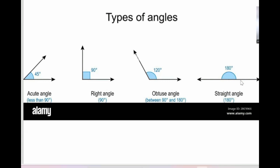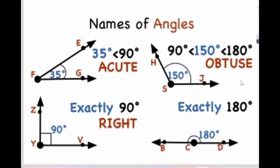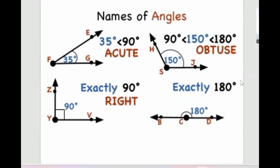I will write it down and send you all the notes at the end of the session. Names of angles: acute is the angle that is less than 90 degrees — for example 35 degrees. This angle is equal to 90 degrees which is a right angle. This one is equal to 150 degrees, it's obtuse. And BCD is a straight angle, equal to 180 degrees.